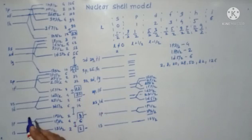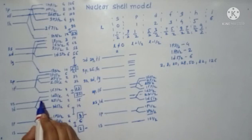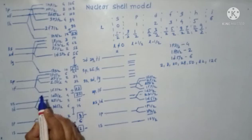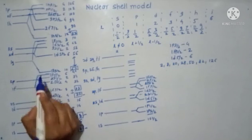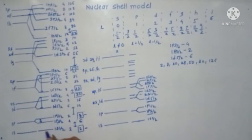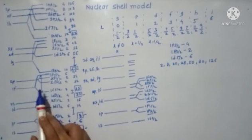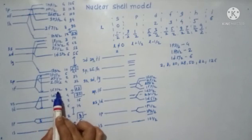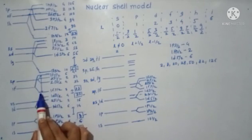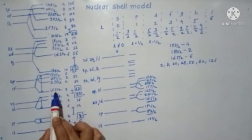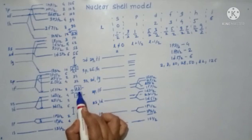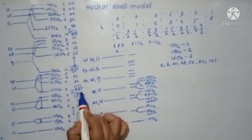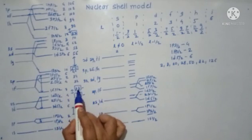We also know that the splitting between the 1p orbital, 1d orbital, and 1f orbital is continuously increasing. Therefore, the 1f 7/2 is coming very downwards as it has more stability, and the third shell closure will be here. 20 plus 8 will give 28 — the shell closure occurs at 28.